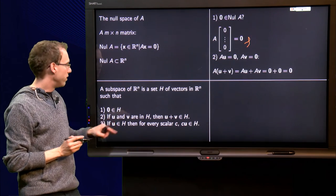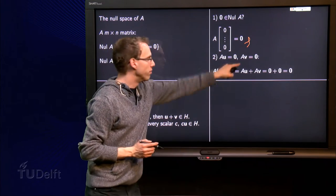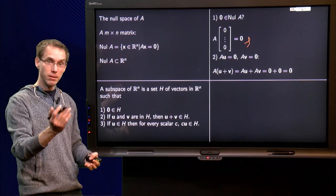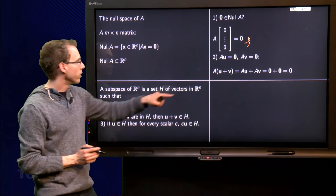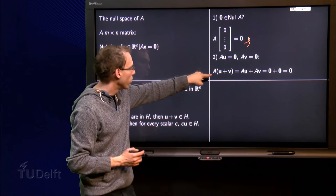Then, if u and v are in null A, then the sum also has to be in null A. So let's take u and v in null A, that means that A times u equals zero and A times v equals zero. Then I wonder, what about A times u plus v? Is this sum also in a null space?